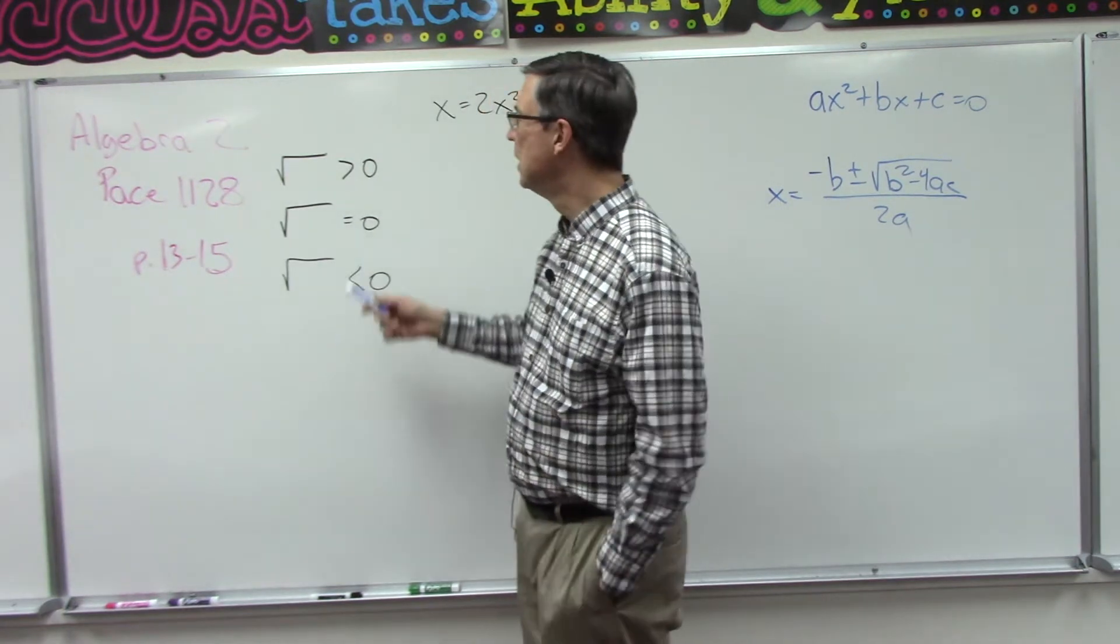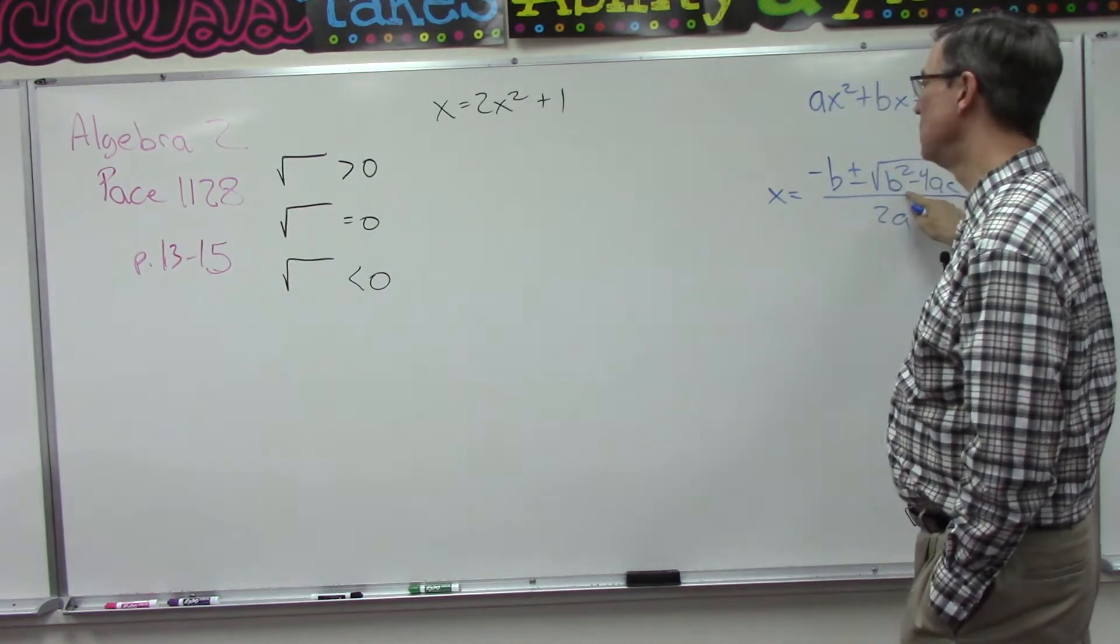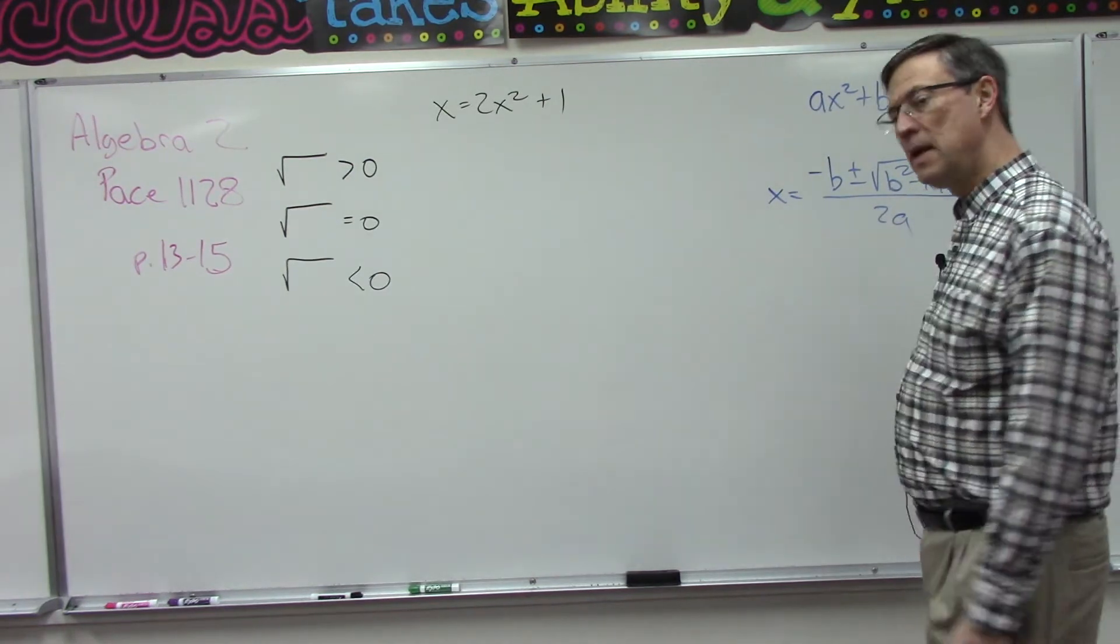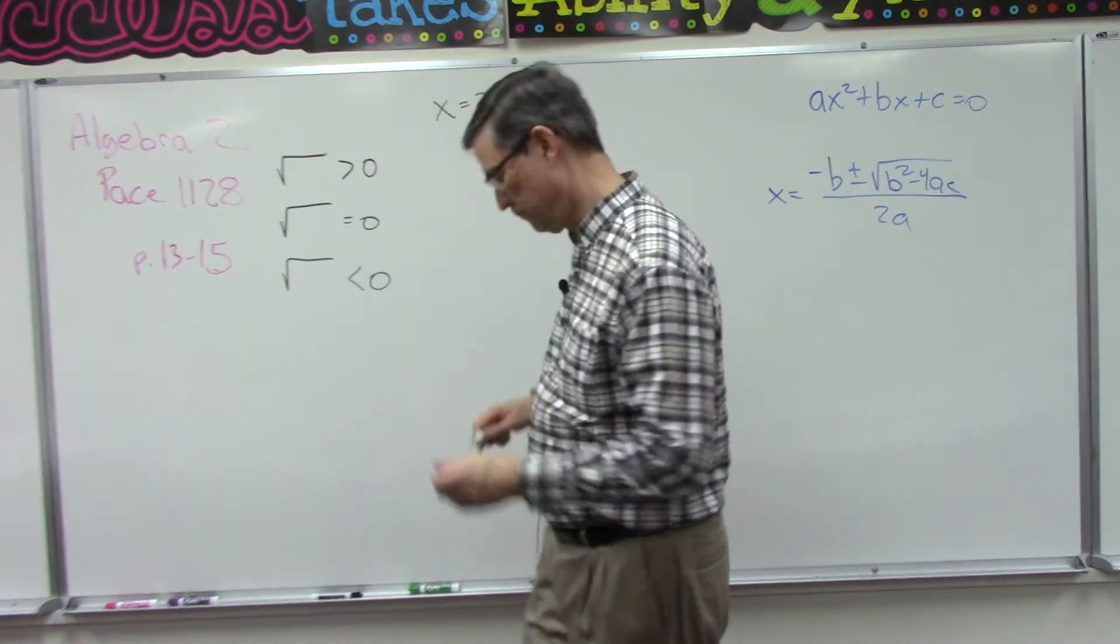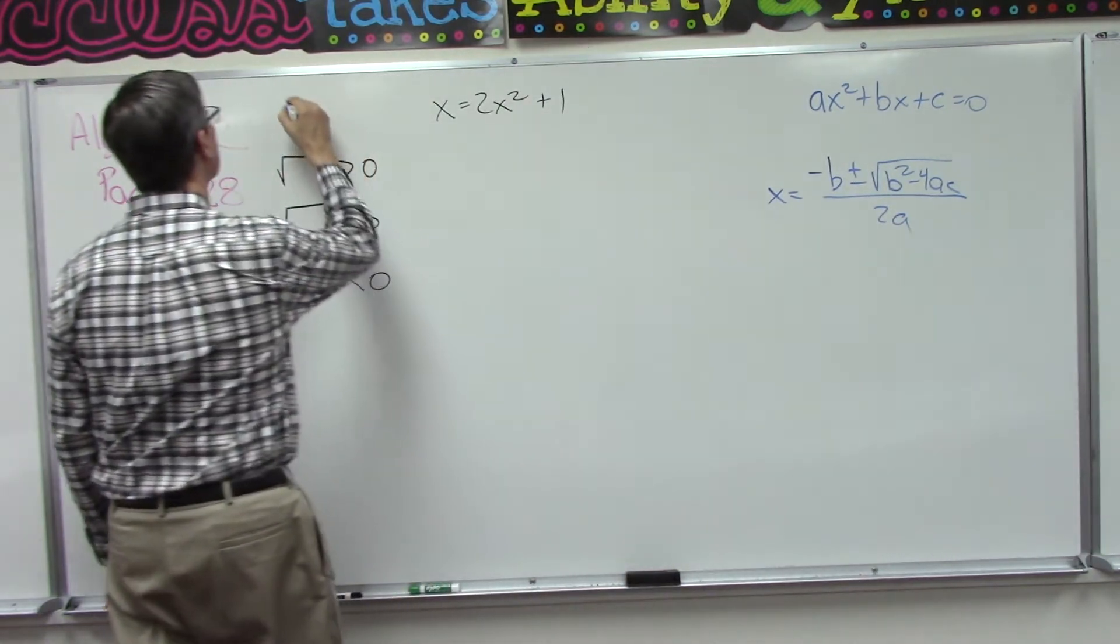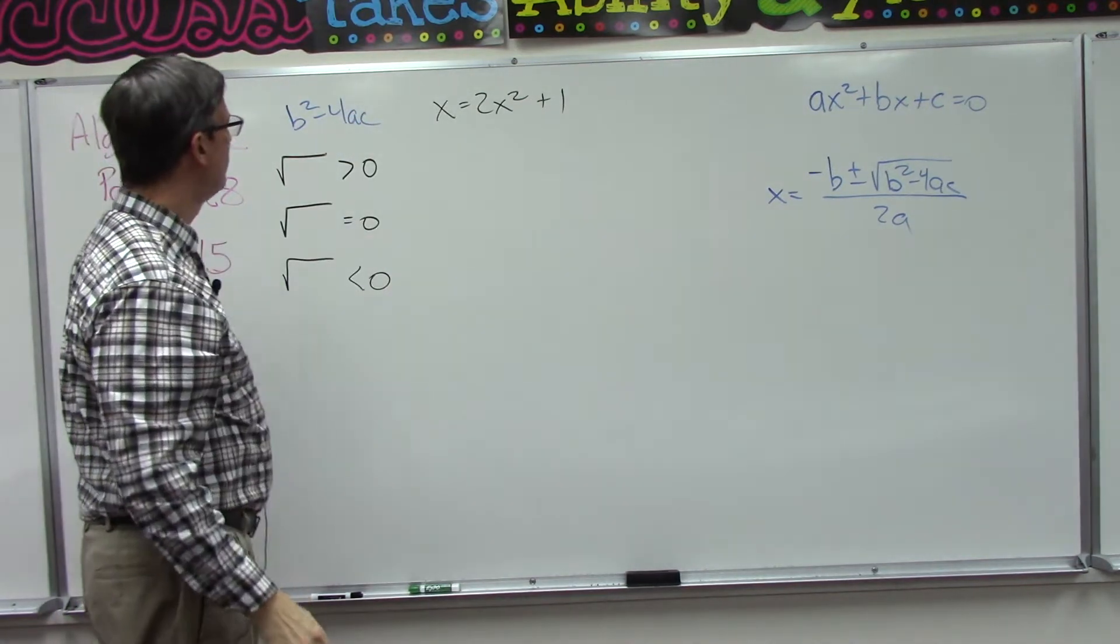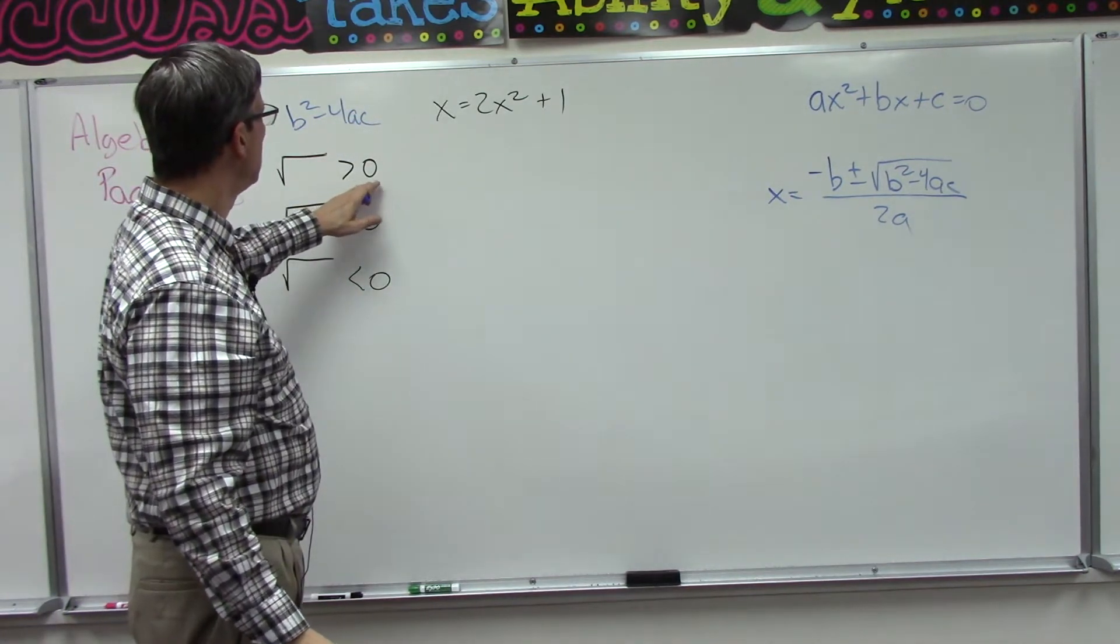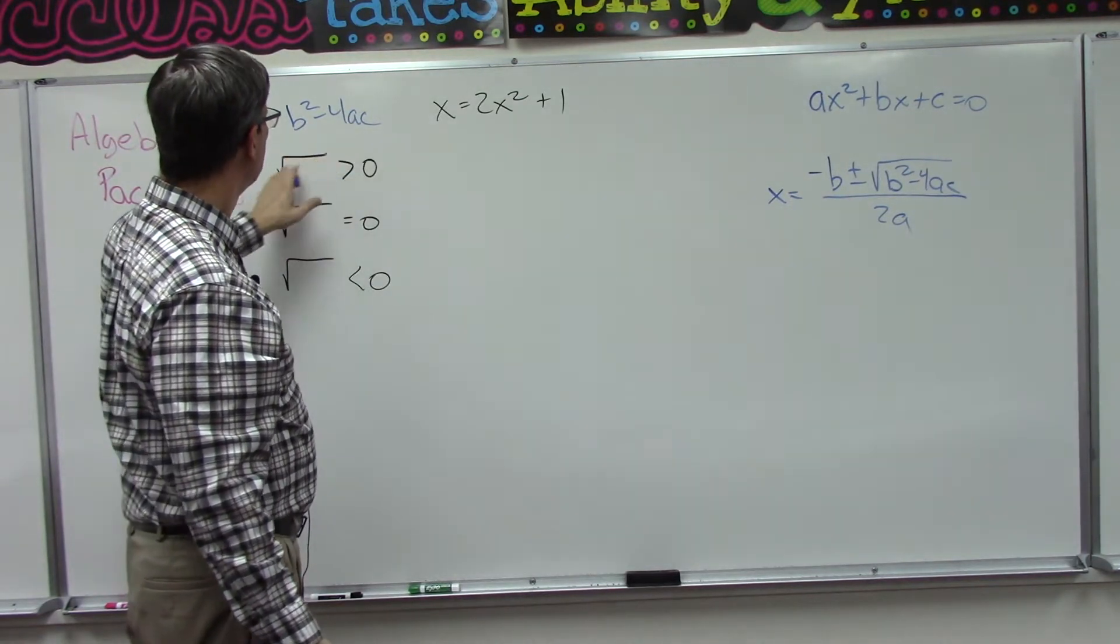Now if you look at page 13, it explains this scenario, but let me talk our way through it. If we take just this part here that's under the radical, which is the b squared minus 4ac, if we just solve b squared minus 4ac and you do the square root of that...